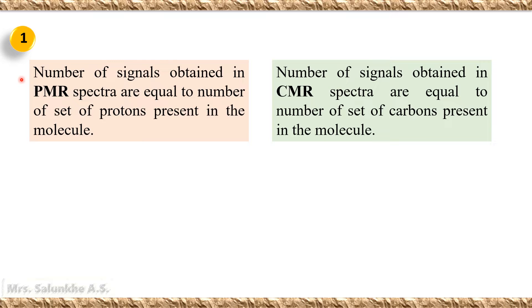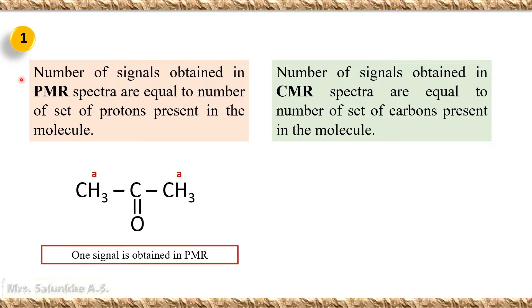In case of PMR spectroscopy, the number of signals obtained in the PMR spectra are equal to the number of sets of protons present in the molecule. For example, the compound acetone: there are two methyl group protons, and as these two methyl group protons have similar chemical and electronic environment, they are equivalent — there is only one set of protons. Therefore, it gives one signal in the PMR spectra.